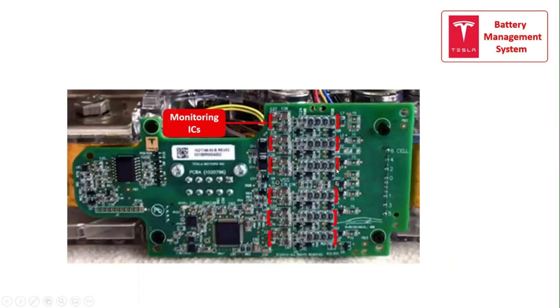The red encircled area of the BMS shows that it contains six monitoring ICs for each series connection in the module. The yellow encircled area shows the terminals where the connection from the six cells will be connected.